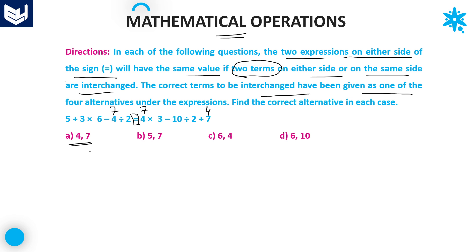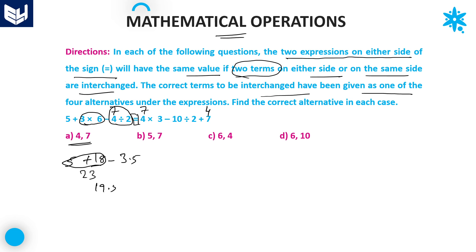First priority will always be given to division: 7 divided by 2 is 3.5. Next, multiplication: 3 into 6 is 18. Then 5 plus 18 is 23. 23 minus 3.5 equals 19.5. So the left hand side value is 19.5.